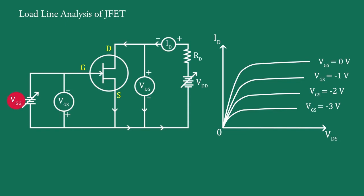Here VGG is the input biasing voltage and VDD is the output biasing voltage, VDS is the drain-to-source voltage across the JFET element and ID is the drain current through the JFET. Applying Kirchhoff's voltage law at this output section,